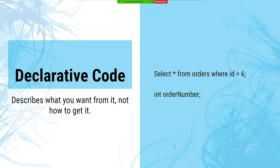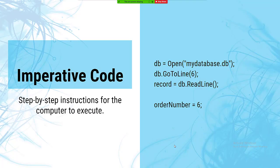I want to talk about what declarative versus imperative code means. Declarative code is not where you tell a computer how to do something — it's where you describe something you want done and the system figures out how to do it. SQL is declarative: you describe what you want and the database figures out how to get it efficiently. Imperative code is where you give step-by-step instructions — do this, then do that, then do that.